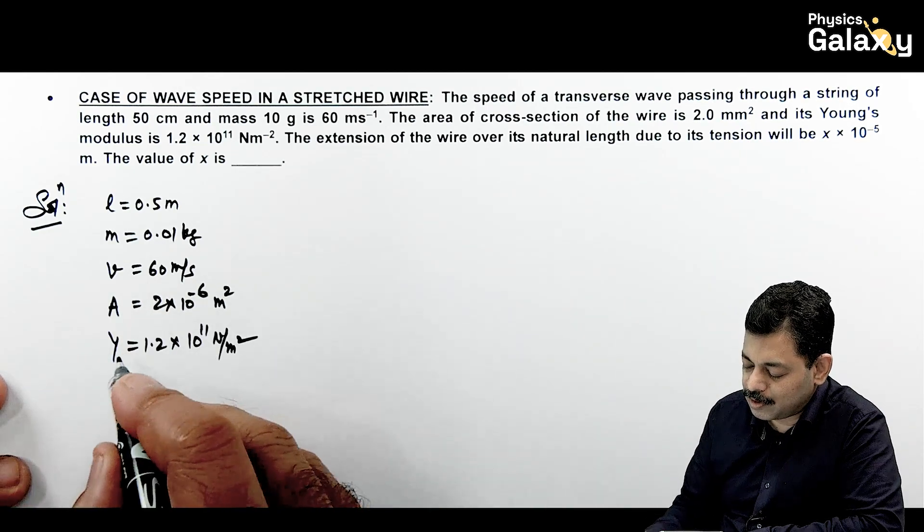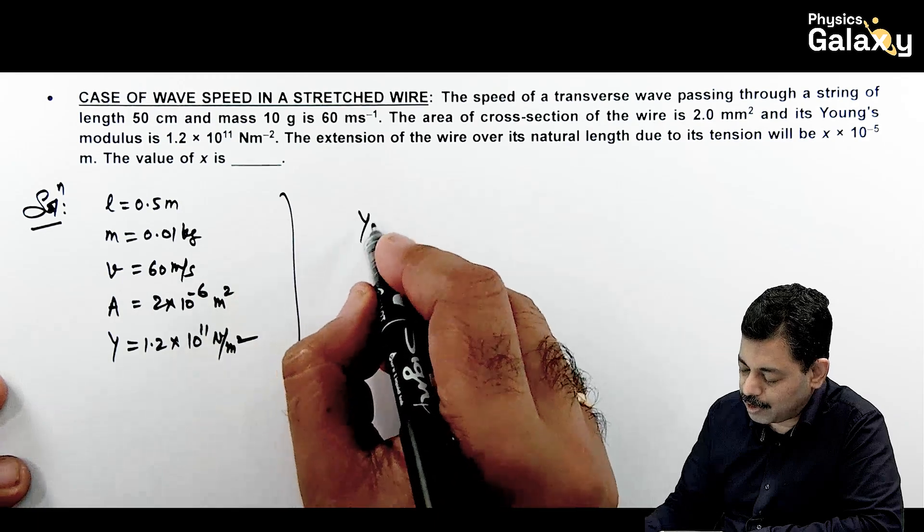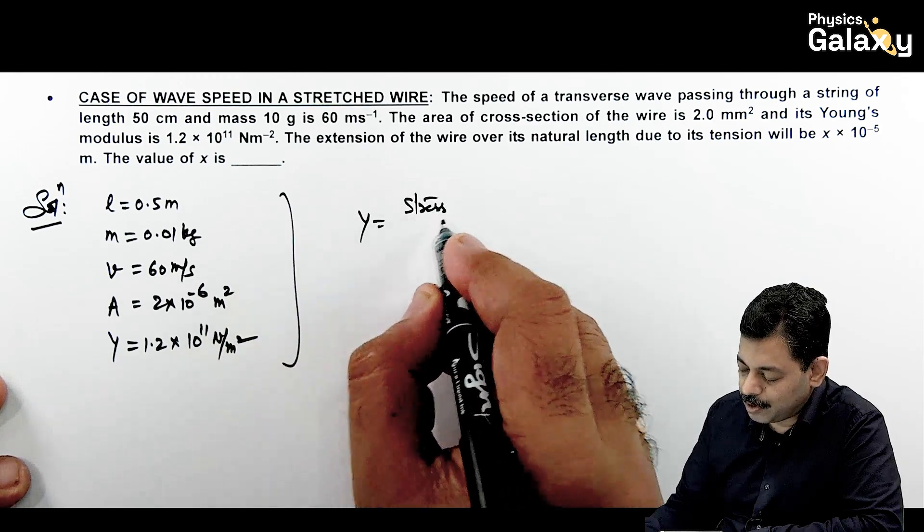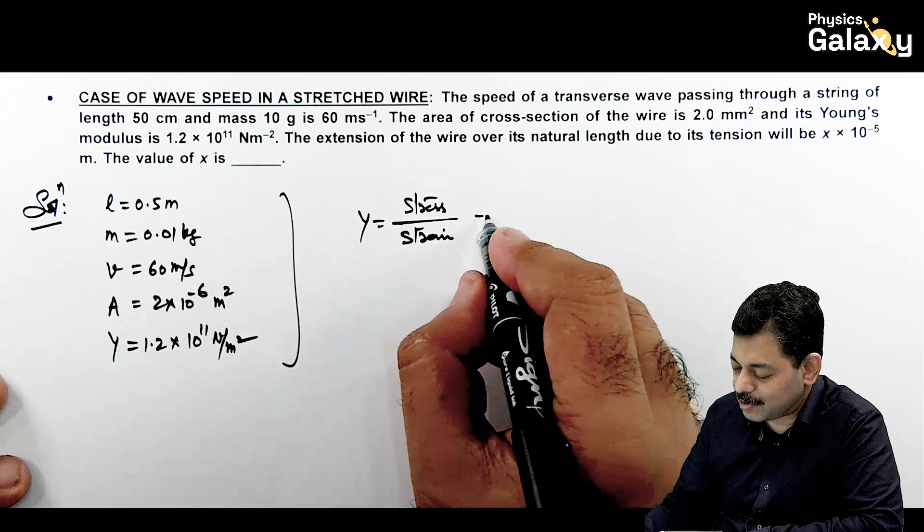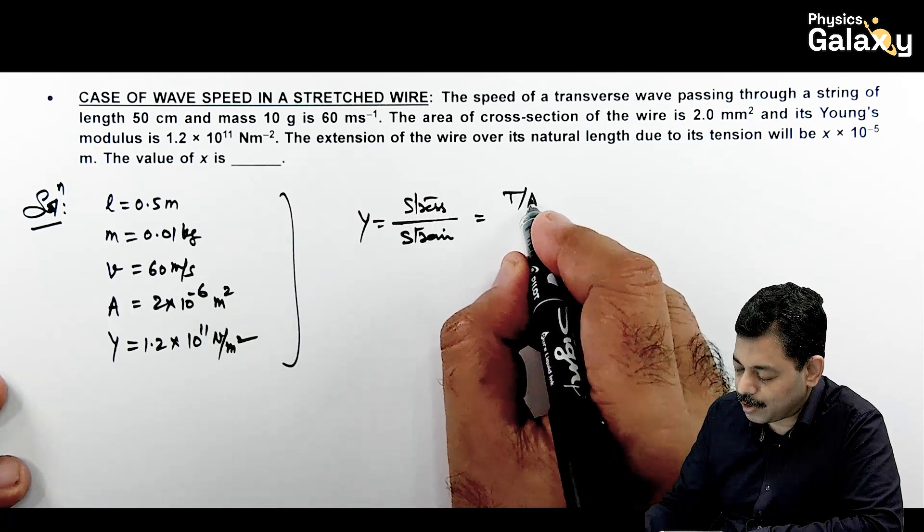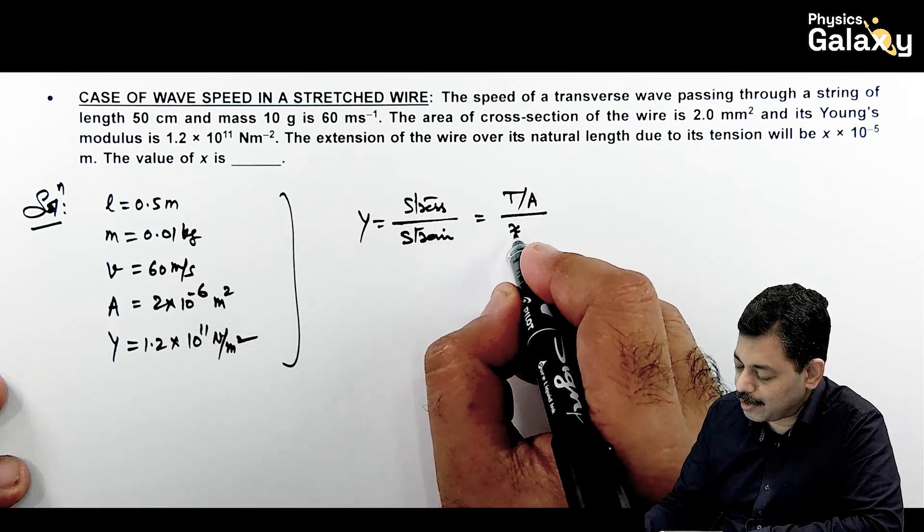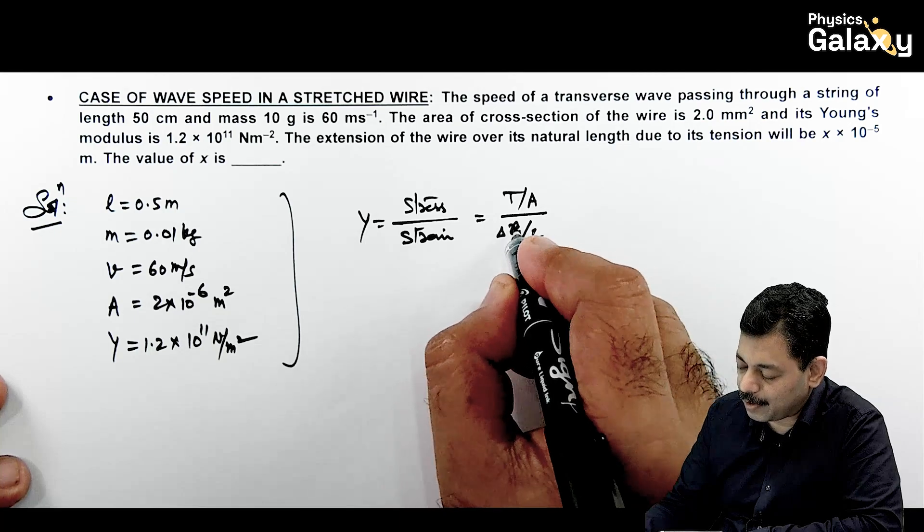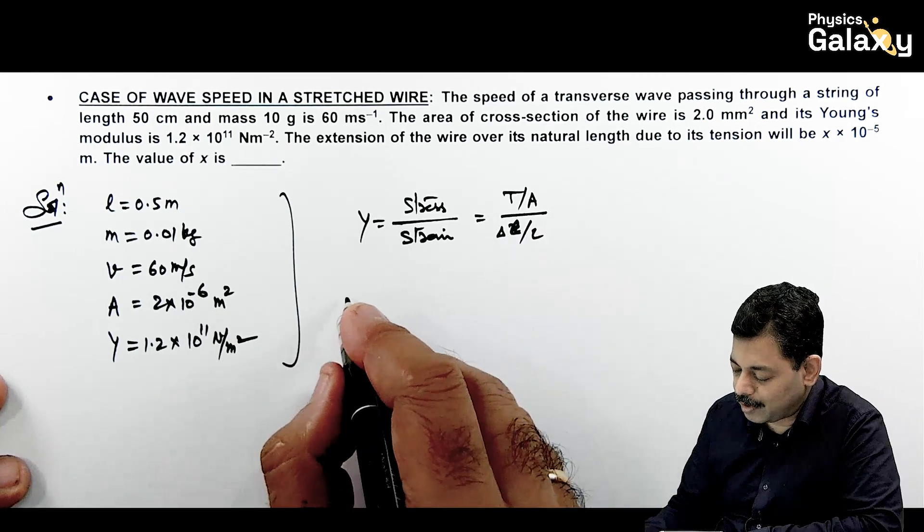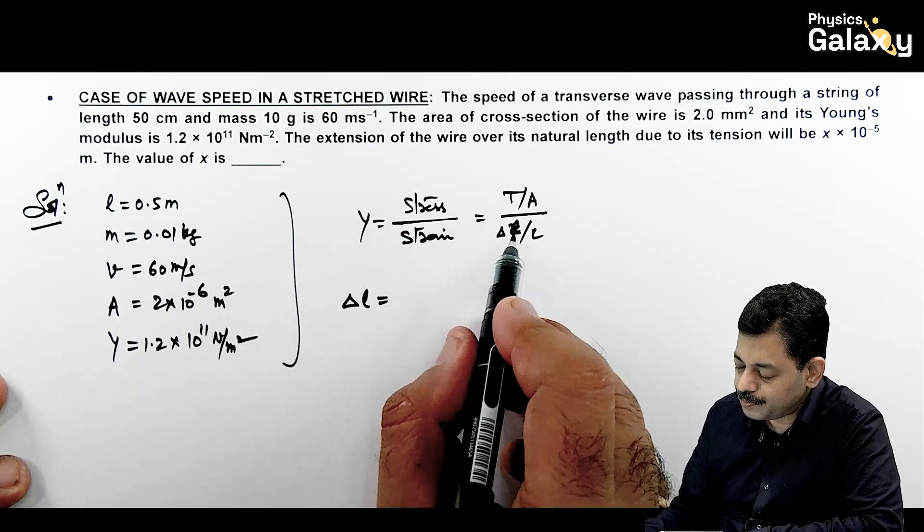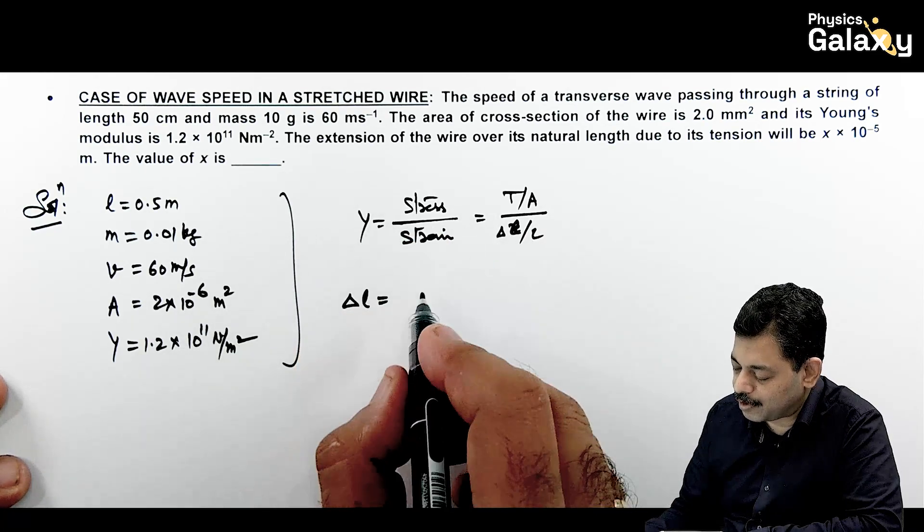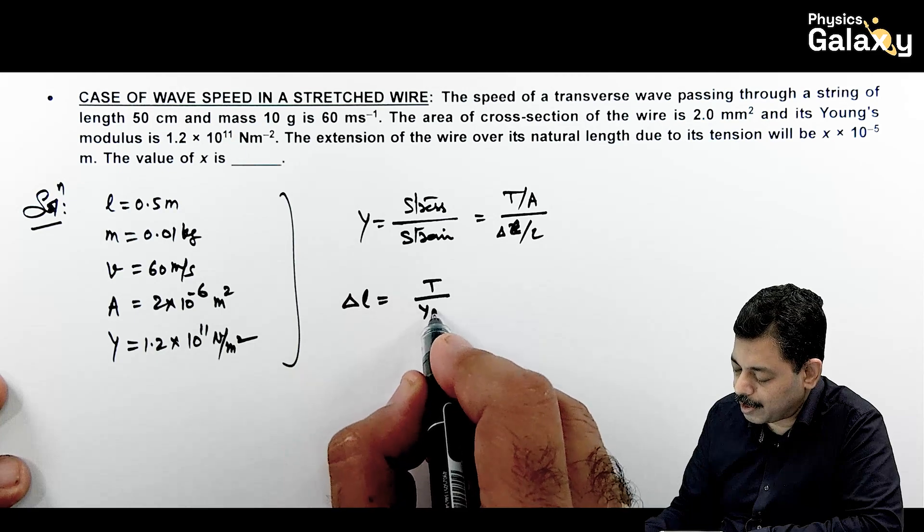Young modulus can be written as stress by strain. Using this relation, we can easily calculate. We write stress as tension upon area, strain we write as delta l by l. So delta l ki value calculate karna hai. Delta l, you rearrange: delta l equals T upon Y A multiplied by l. So this is the value we need to calculate.